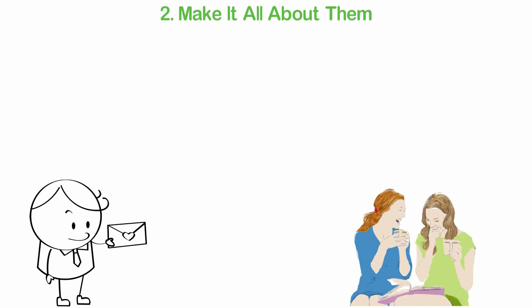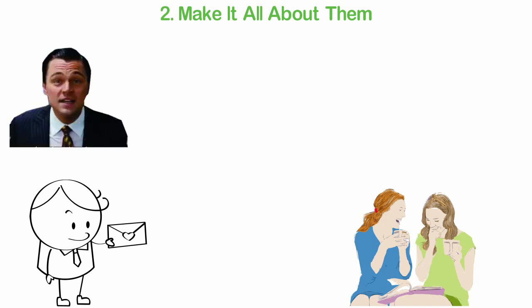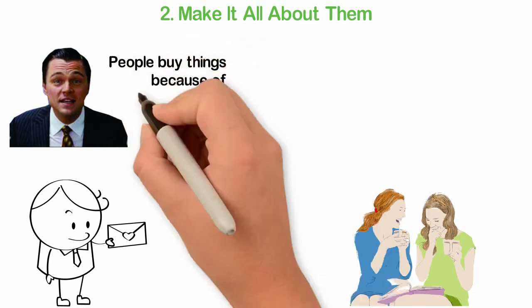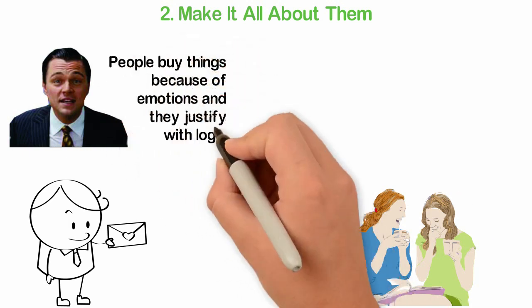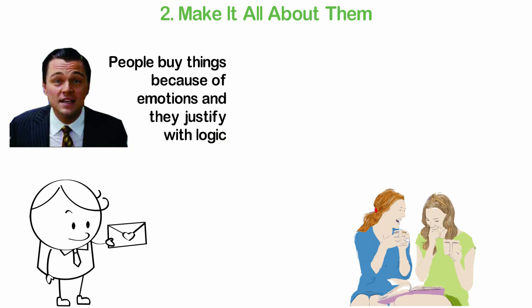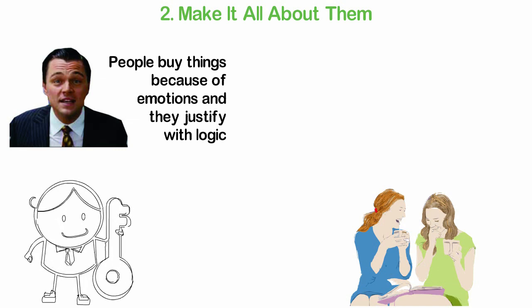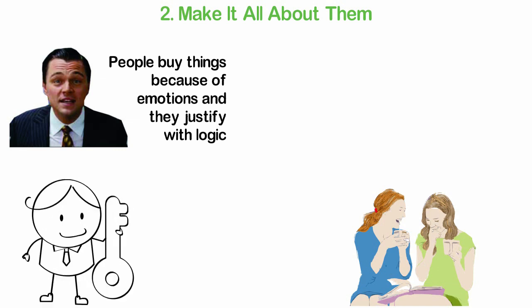Appeal to their emotions. According to Dan Lok, author of Sell Me This Pen, How to Sell Anything to Anyone, Anytime, people buy things because of emotions and they justify with logic. When you understand this, you'll stop trying to push your products, your services or the features and benefits of your product down people's throats. For instance,